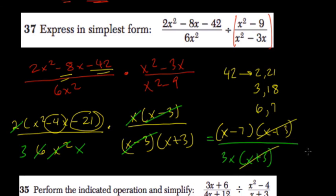And what are we left with? We have (x - 7) over 3x, our simplest form.